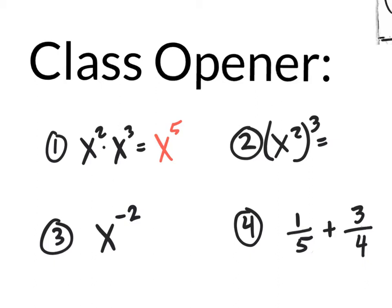What if you have a power to a power? That's rule 2 of exponents. When you have a power to a power, you actually multiply. So x squared to the 3rd power is x to the 6th.